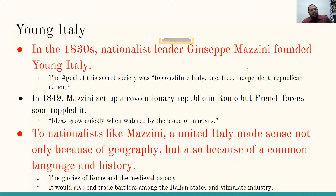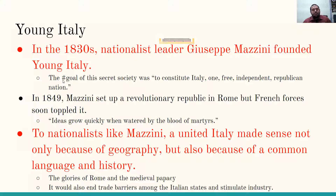Young Italy. In the 1830s, nationalist leader Giuseppe Mazzini founded an organization called Young Italy. The goal of this secret society was to, quote, 'constitute Italy one free, independent Republican nation.' In 1849, Mazzini set up a revolutionary republic in Rome, but French forces soon toppled it — you can't get rid of the Pope. There's a quote: 'ideas grow quickly when watered by the blood of the martyrs,' reminiscent of La Marseillaise, the French national anthem.